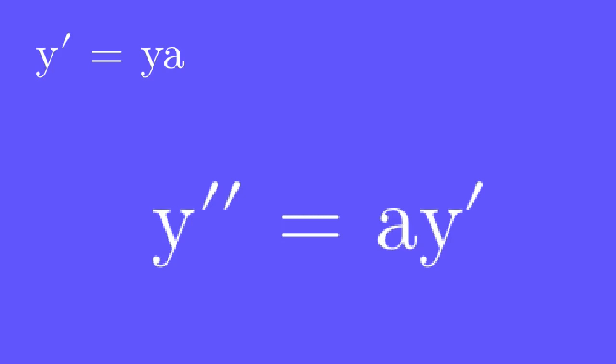This is the second and last derivative, but still the arbitrary constant a is present in the equation. From the previous equation, a is equal to y prime over y.